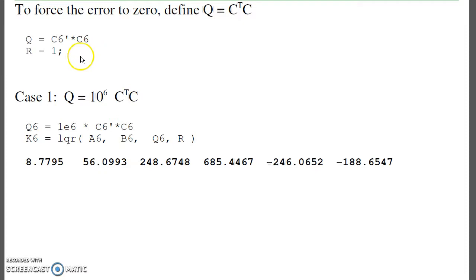I'll now choose Q to be C transpose C. R is one. And then pick alpha. As alpha goes to infinity, the two will converge. To start with, let's have alpha be 10 to the 6.